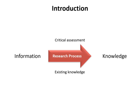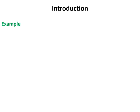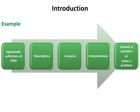In our daily life we are doing a research process every day. For example, when you want to buy a car, first we will do a systematic collection of data about the type and model of the car and the agencies. Then we will describe, analyze, and interpret these data in order to solve our problem and reach a scientific conclusion about which type of car we want to buy. This is the same sequence of the research process in order to answer a question or solve a problem.